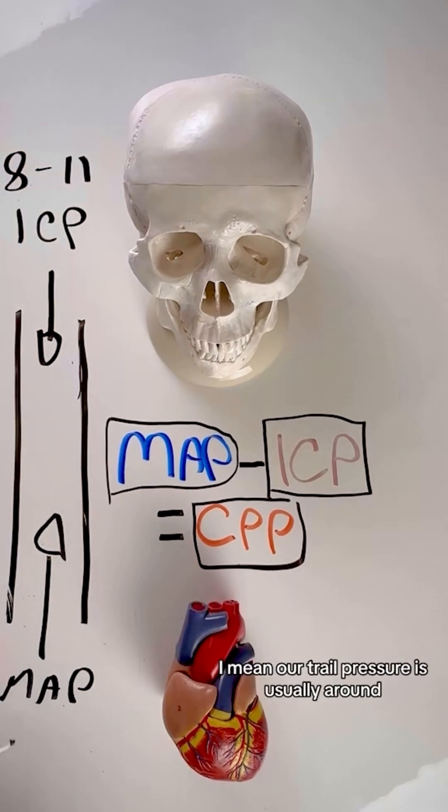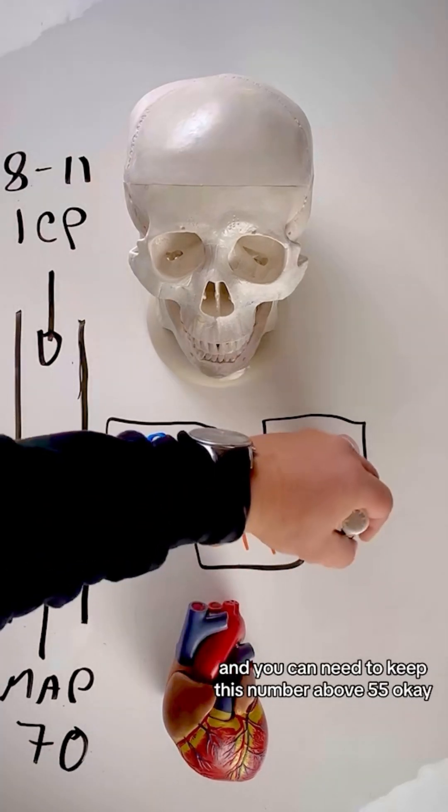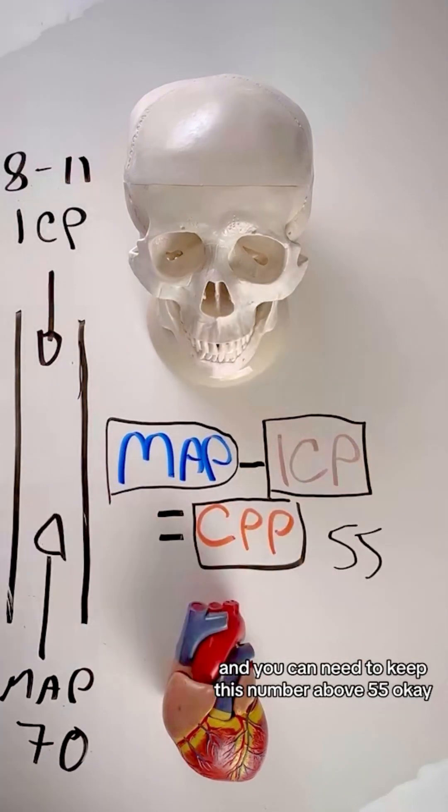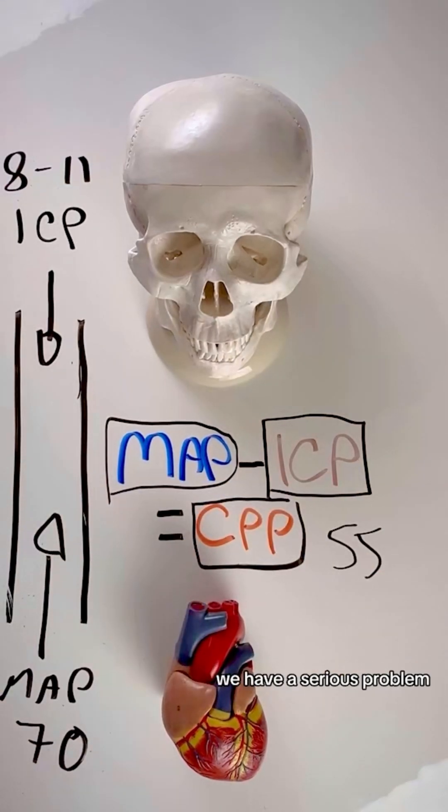Mean arterial pressure is usually around 70, and you're left with a number that gives you your cerebral perfusion pressure. And you need to keep this number above 55, ideally above 55. Anything below 50, we have a serious problem.